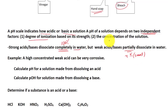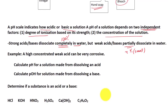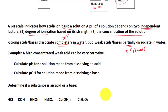Now let's look at the second factor: the concentration of the solution — how many moles are in a specific volume of solution. This is extremely important. Even if you have a weak acid, if you have a lot of it, it will become as corrosive or as toxic as a strong acid that is diluted in a very large volume of water. So be careful, and we're going to look at that mathematically.